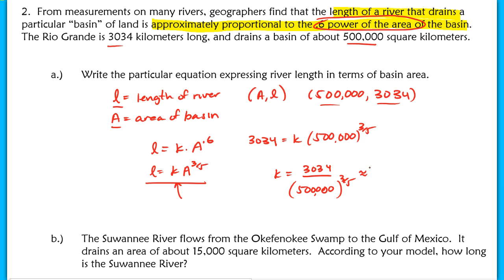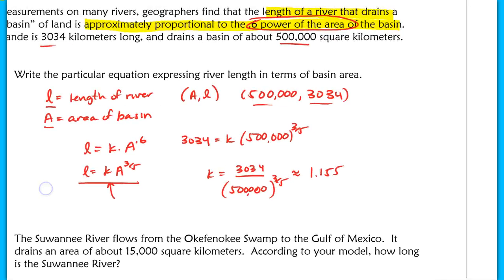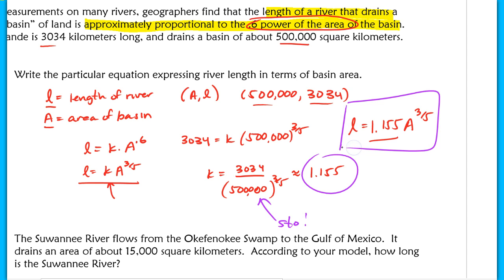That approximate value, I worked this out in the calculator already, is 1.155. So if I want to write the particular equation, it should be L length equals 1.155 times A to the 3/5. Of course, remember, you need to make sure you store that value. This is not the value that you should use every time you punch something in your calculator. You need to make sure you store that value. That's just an approximation, so there's our particular equation.